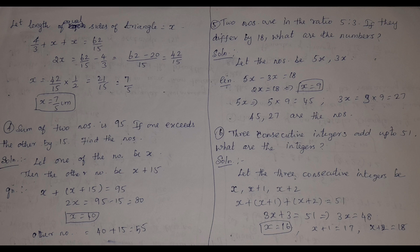Fifth problem: two numbers are in the ratio 5:3. If they differ by 18, what are the numbers? Let the numbers be 5x and 3x. Their difference: 5x minus 3x = 2x = 18, so x = 9. Therefore the numbers are 45 and 27.